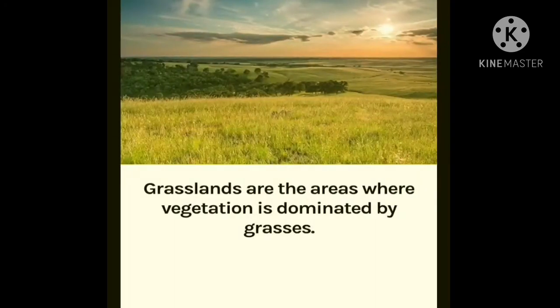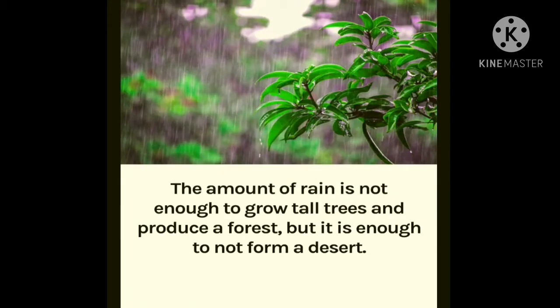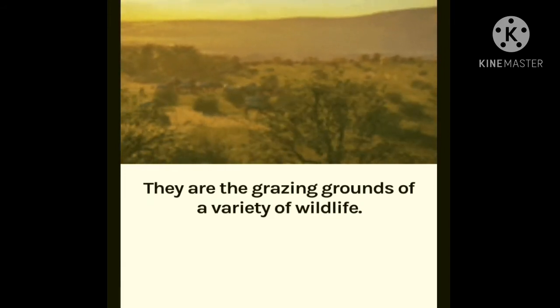First of all, we will learn about the grasslands. Grasslands are areas where vegetation is dominated by grasses. These lands are wide expanses filled with low-growing plants such as grass and wildflowers. The amount of rain is not enough to grow tall trees and produce a forest, but it is enough to not form a desert. They are the grazing grounds of a variety of wildlife.